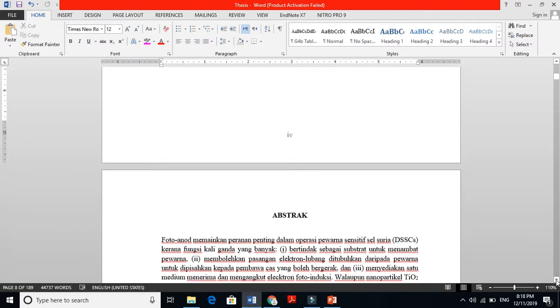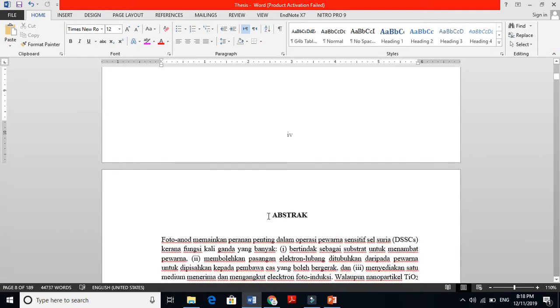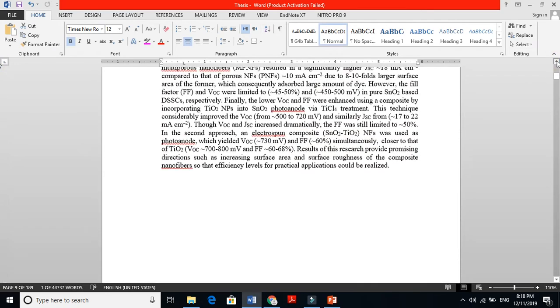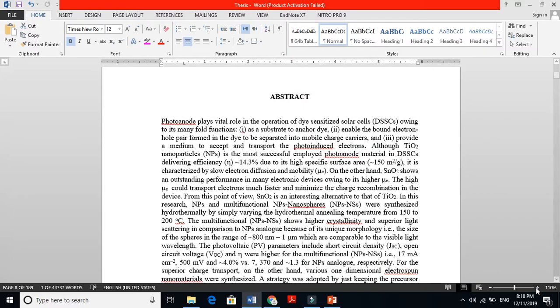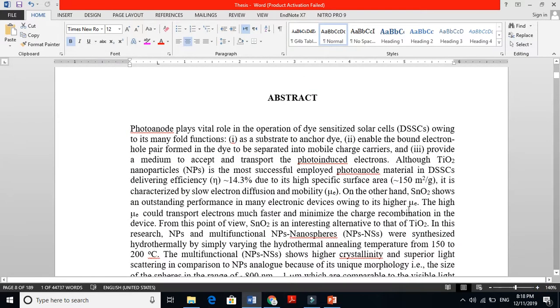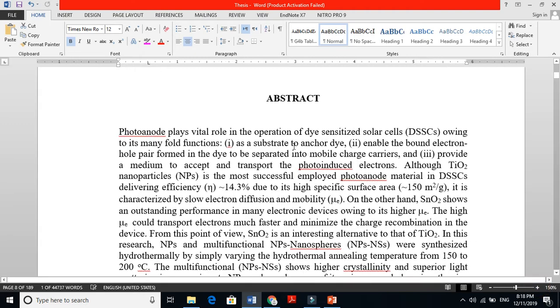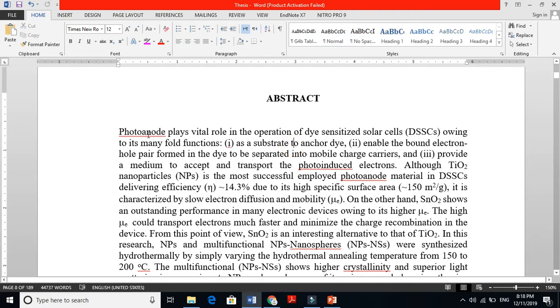This is my Malay version abstract, but this abstract is just one page. Let's start and read this a little bit. I don't want to keep you waiting and waste your time, but just to give you the sense. My work was basically on photoanode as working electrode. I tell the reader first: photoanode plays vital role in the operation of dye-sensitized solar cell owing to its manifold functions.